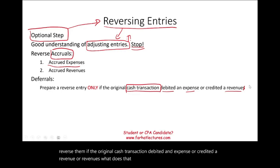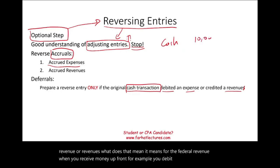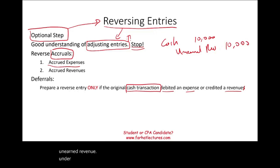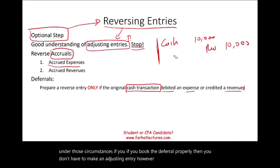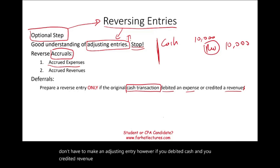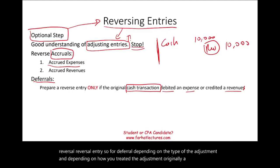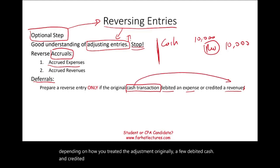What does that mean? For deferral revenue, when you receive money up front, for example, you debit cash for $10,000 — you're supposed to credit unearned revenue. Under those circumstances, if you book the deferral properly, then you don't have to make a reversing entry. However, if you debited cash and credited revenue initially when you got the cash, then you might have to do a reversal entry. For deferrals, depending on how you treated the transaction originally — if you debited cash and credited revenue — you might have to do a reversal.